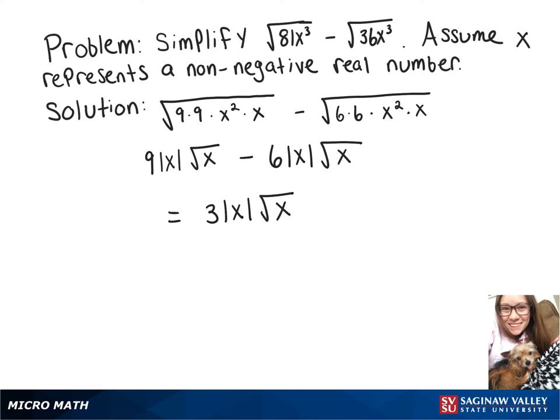And then since the directions specify that x is a non-negative real number, we can take off our absolute value, writing this just as 3x times the square root of x.